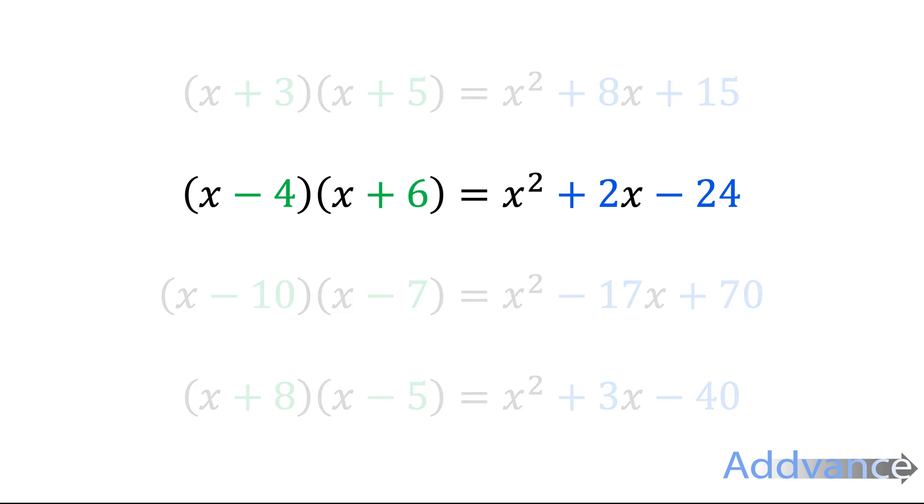Well, what we can do is you can see that the minus 4 plus the 6 makes 2, and the minus 4 times 6 makes minus 24. So if you multiply them, you get minus 24. If you add them, you get the 2.